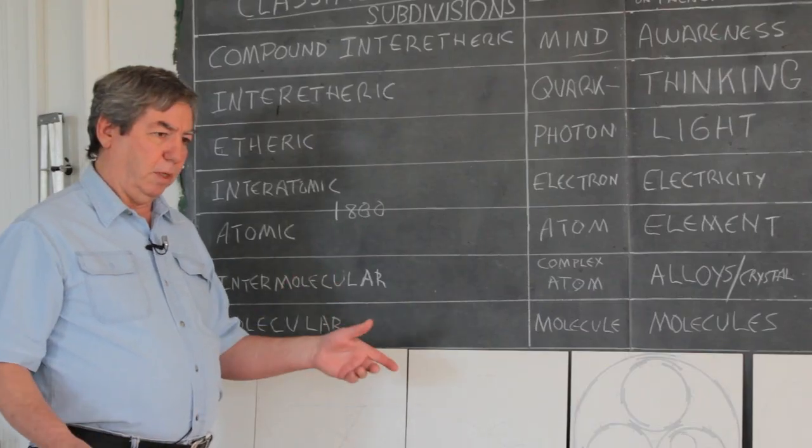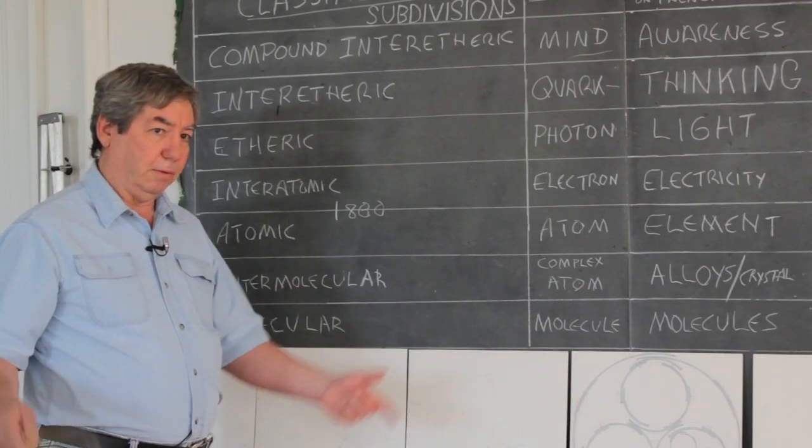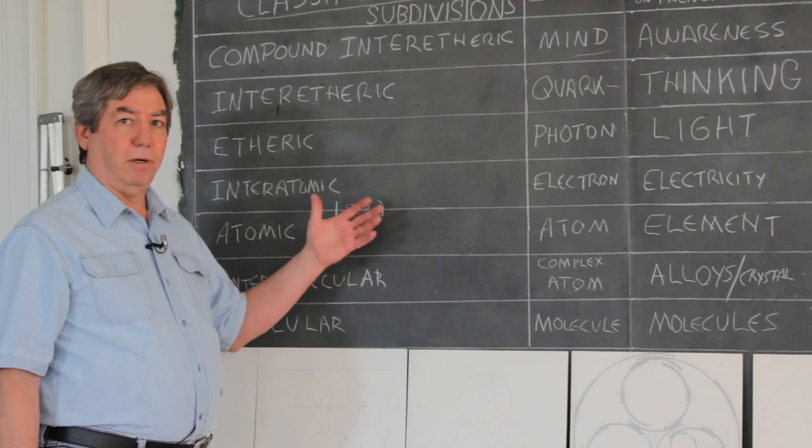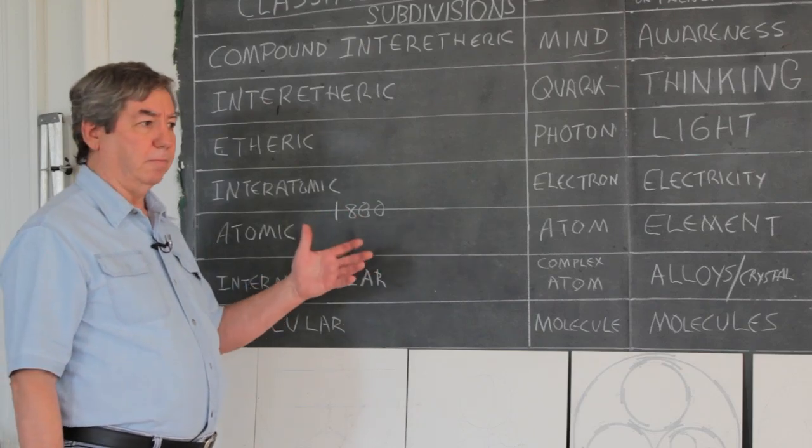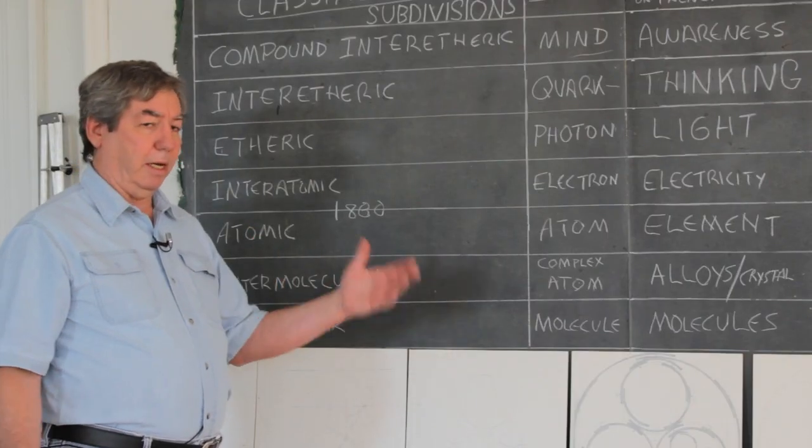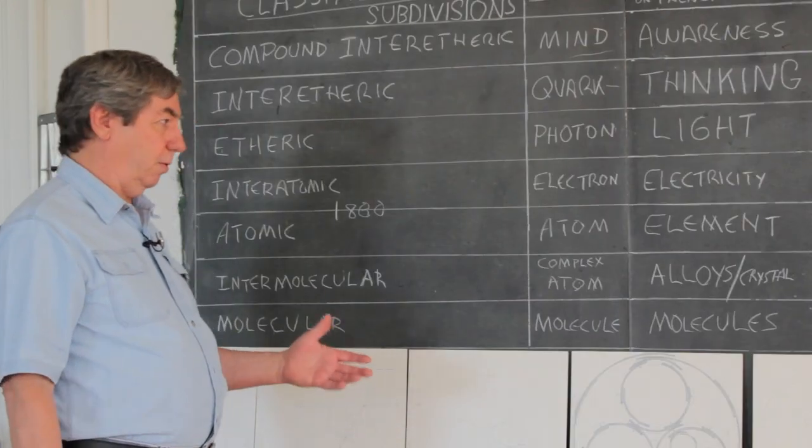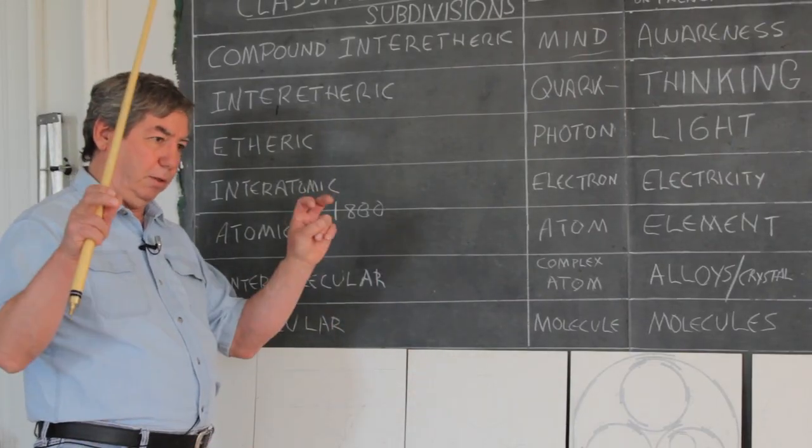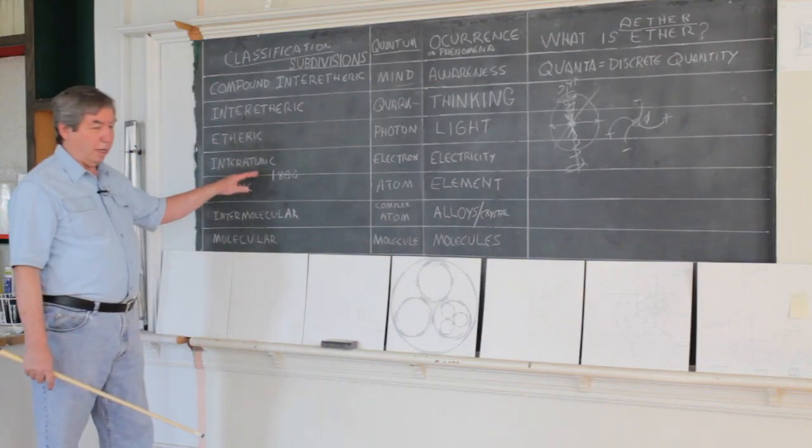Because there are countless units of these etheric particles, this etheric energy, and they all behave in different ways, that accounts for why we had so many different definitions. They were all looking at different animals and lumping it into the word ether because they didn't know how to analyze and take it apart.